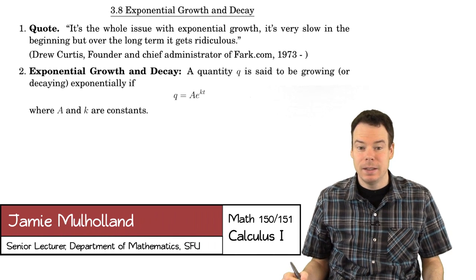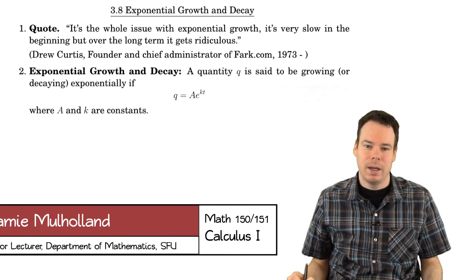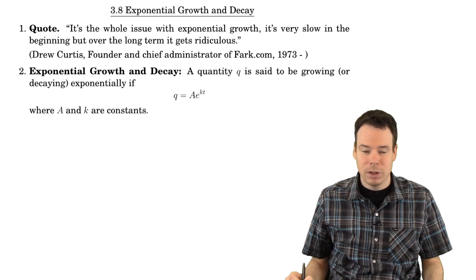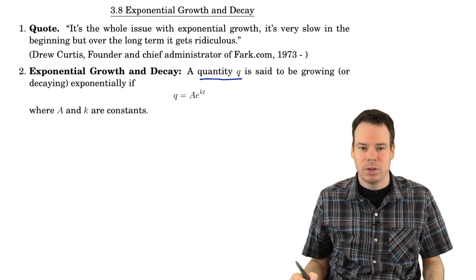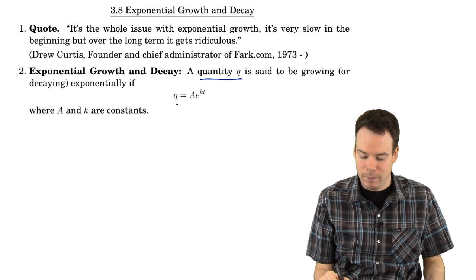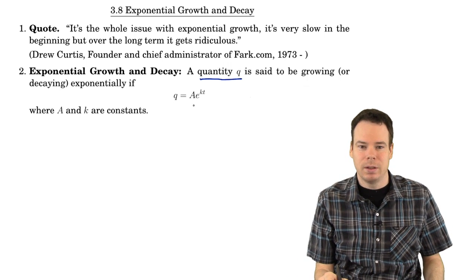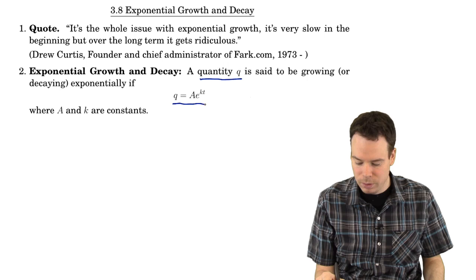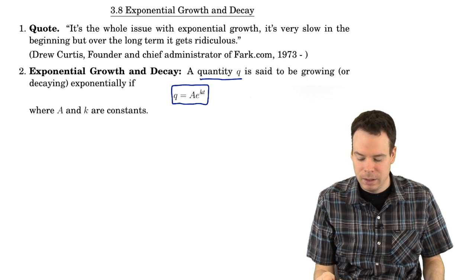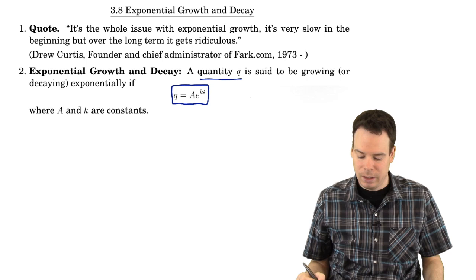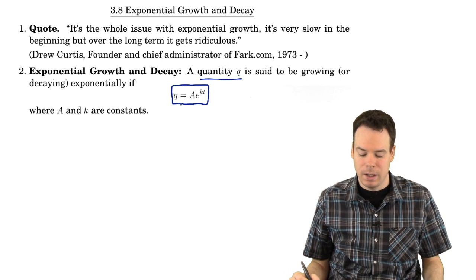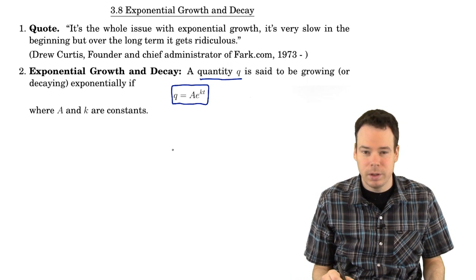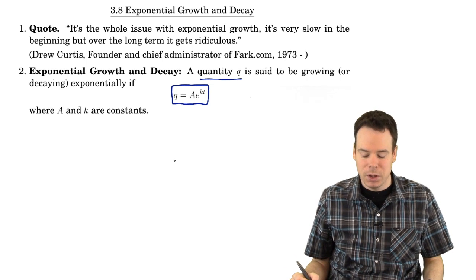Hi everyone, welcome back. In this section we're going to look at exponential growth and decay. What do we mean by exponential growth? We say that a quantity Q is growing exponentially if Q can be represented by an exponential function — if Q is some constant A times E to some other constant K times T, where Q is a function of T and T is time.